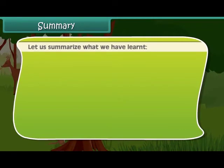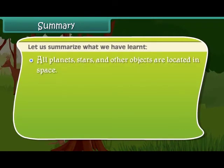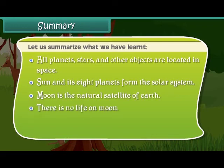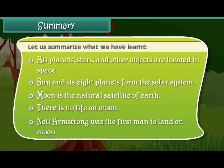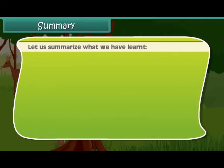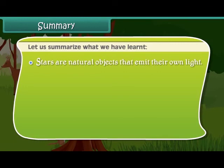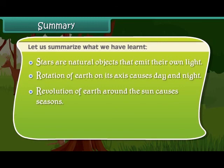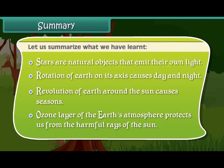Let us summarize what we have learned. All planets, stars and other objects are located in space. The Sun and its eight planets form the solar system. Moon is the natural satellite of Earth and there is no life on the Moon. Neil Armstrong was the first man to land on the Moon. Stars are natural objects that emit their own light. The rotation of Earth on its axis causes day and night. The revolution of Earth around the Sun causes seasons. The ozone layer of Earth's atmosphere protects us from the harmful rays of the Sun.